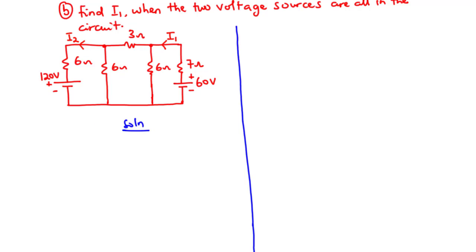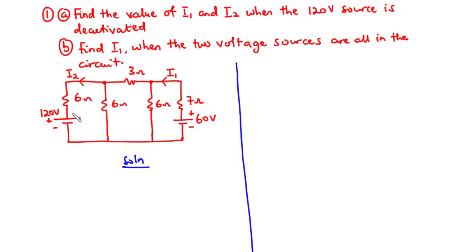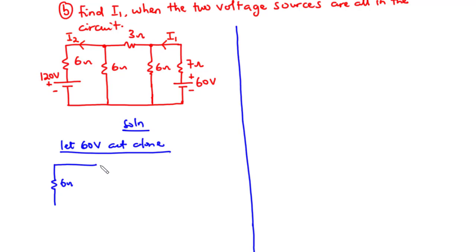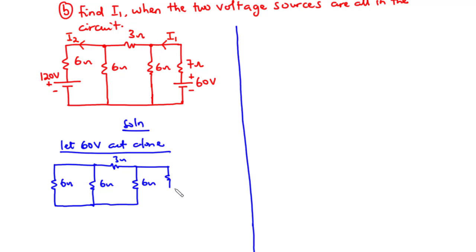To deactivate the 120 volt source, we represent it with a short circuit because it is a voltage source. So we let the 60 volt source act alone. Redrawing the circuit, we have a 6 ohm resistor, another 6 ohm resistor, a 3 ohm resistor, another 6 ohm resistor, a 7 ohm resistor, and the 60 volt source.